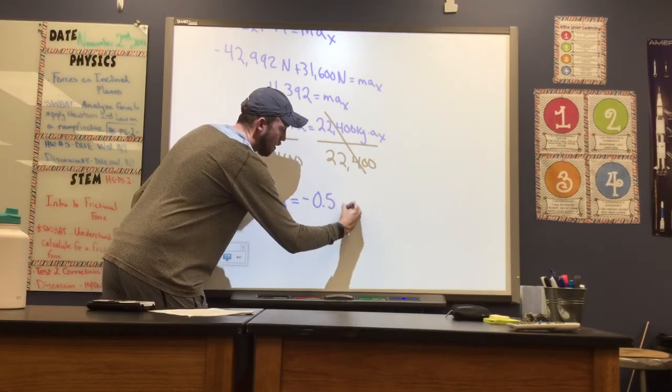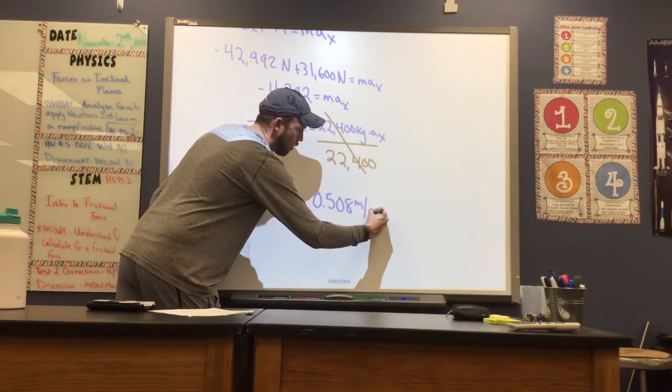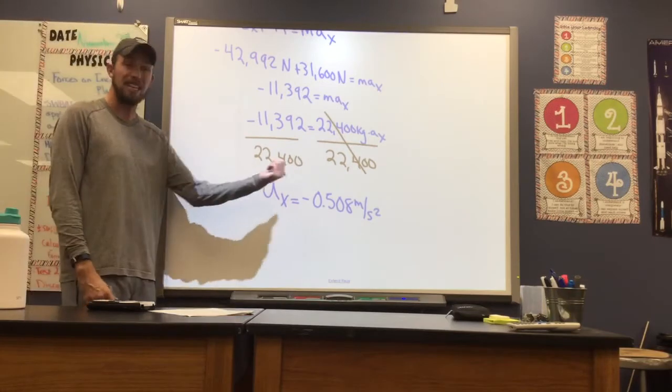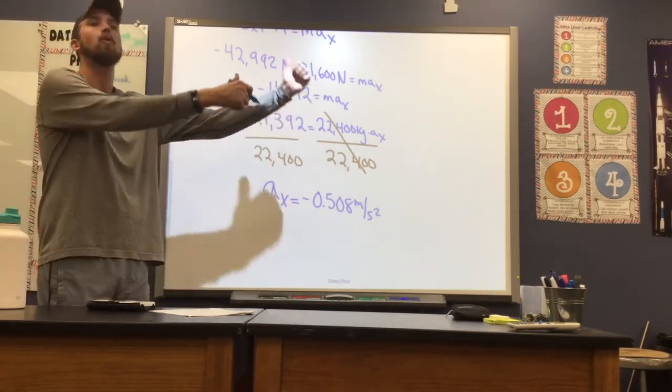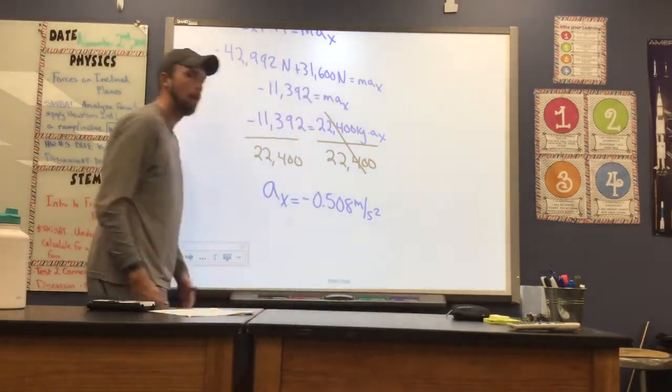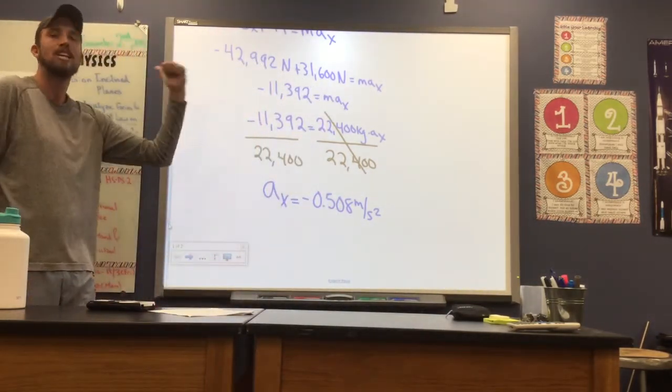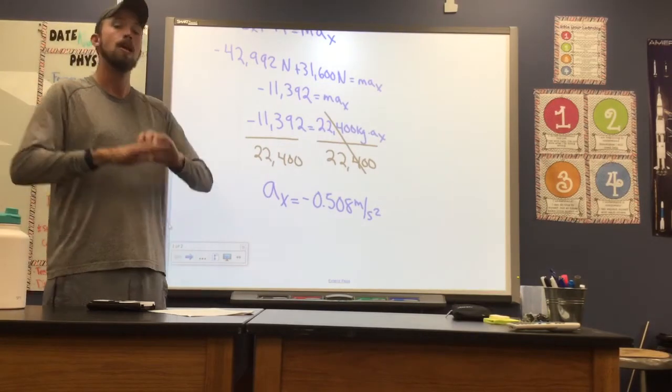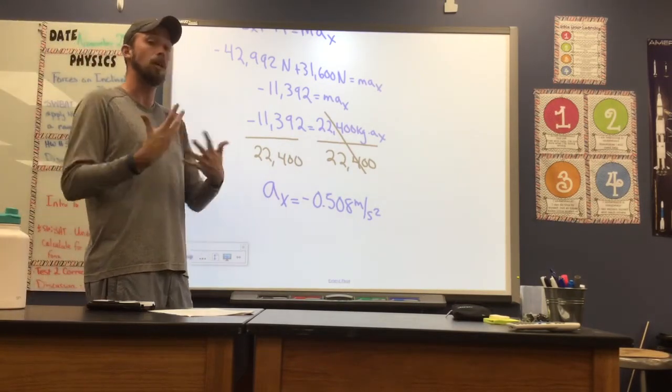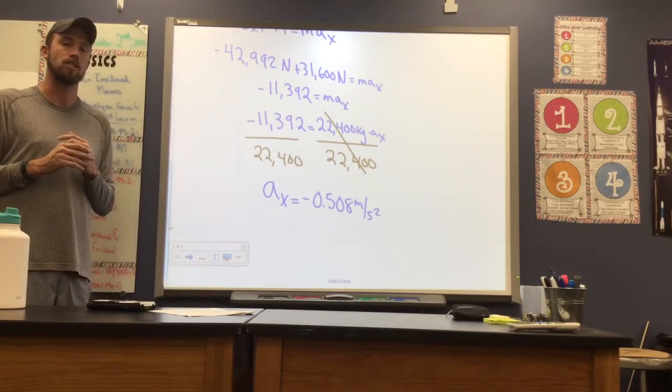And I'm going to get a value for my acceleration in the X direction. And for me, that's going to be a negative value, about 0.508 meters per second squared. And all that means is that I have an imbalance in my forces, meaning I've gotten more force directed in the negative direction. So my object, my sailboat, is going to want to tend to move in the negative X direction.